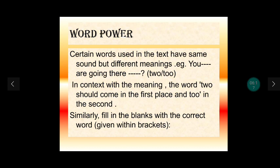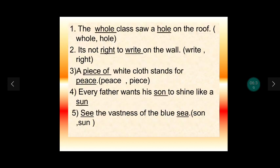Now, word power. बच्चों, कभी-कभी ऐसा होता है कि दो words सुनने में एक जैसे लगते हैं लेकिन उनका meaning अलग होता है. आपको देखना है कि किस blank में कौन सा word जाएगा — spelling अलग है, meaning अलग है. First example: 'The W-H-O-L-E class saw a H-O-L-E on the roof.' — WHOLE यानि संपूर्ण/पूरा, और HOLE यानि छेद. तो पूरी class ने देखा कि छत में एक छेद था.